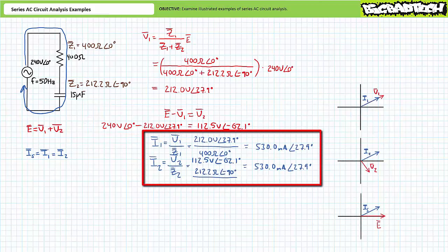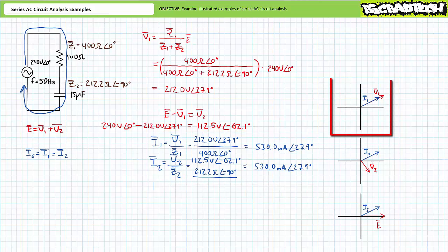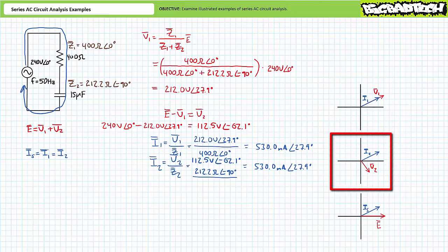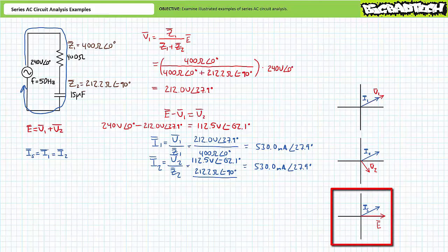Application of Ohm's law to either impedance illustrates the current through either element is 530 milliamperes at an angle of 27.9 degrees. Source current for the purely series circuit is also 530 milliamperes at an angle of 27.9 degrees. The phasor diagram for resistive impedance Z1 illustrates that current and voltage appear to be in phase with one another. The phasor diagram for capacitive impedance Z2 illustrates that current appears to lead voltage by a relative 90 degrees. The phasor diagram for the complete circuit illustrates that source current appears to lead source voltage by a relative 27.9 degrees.